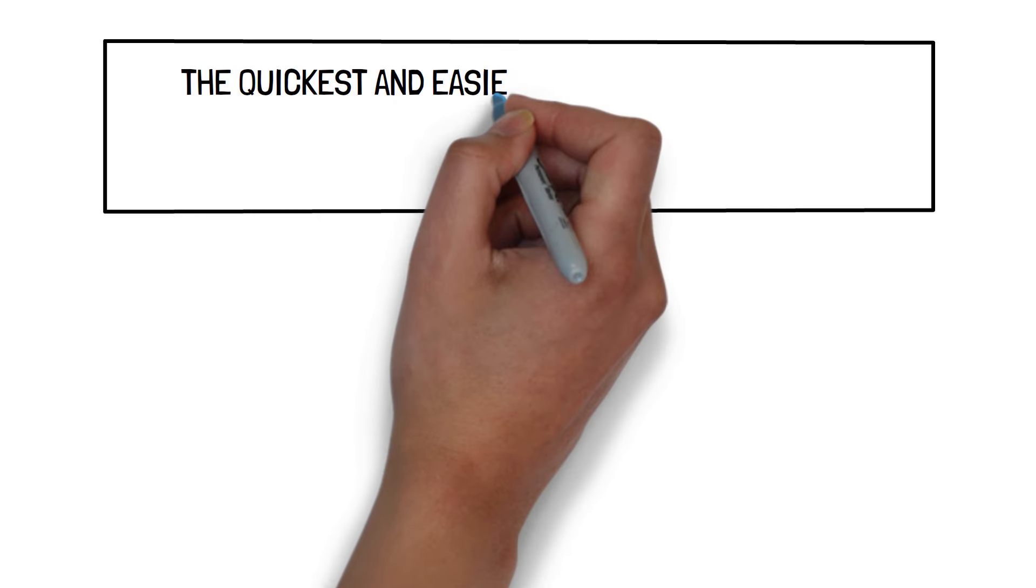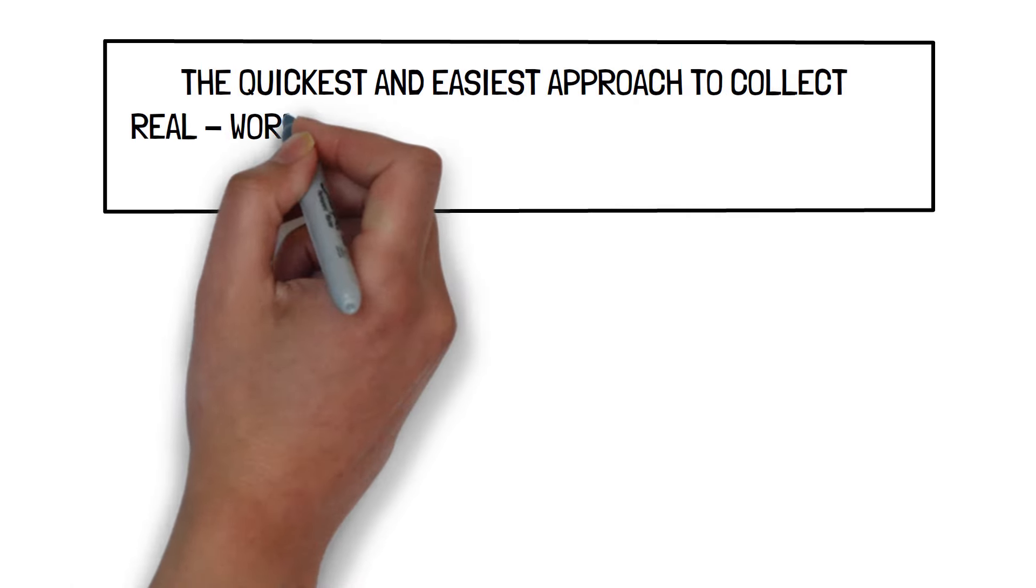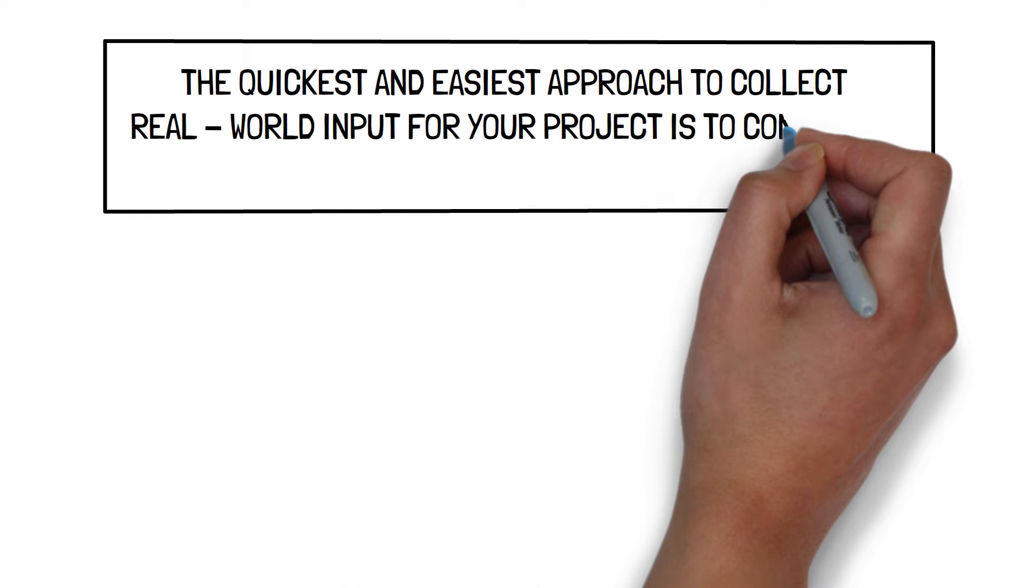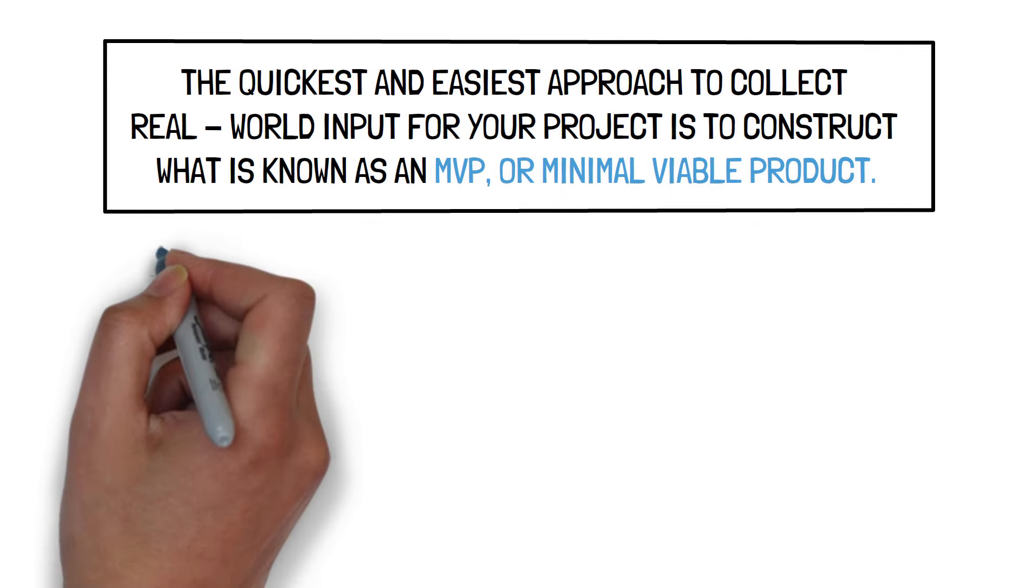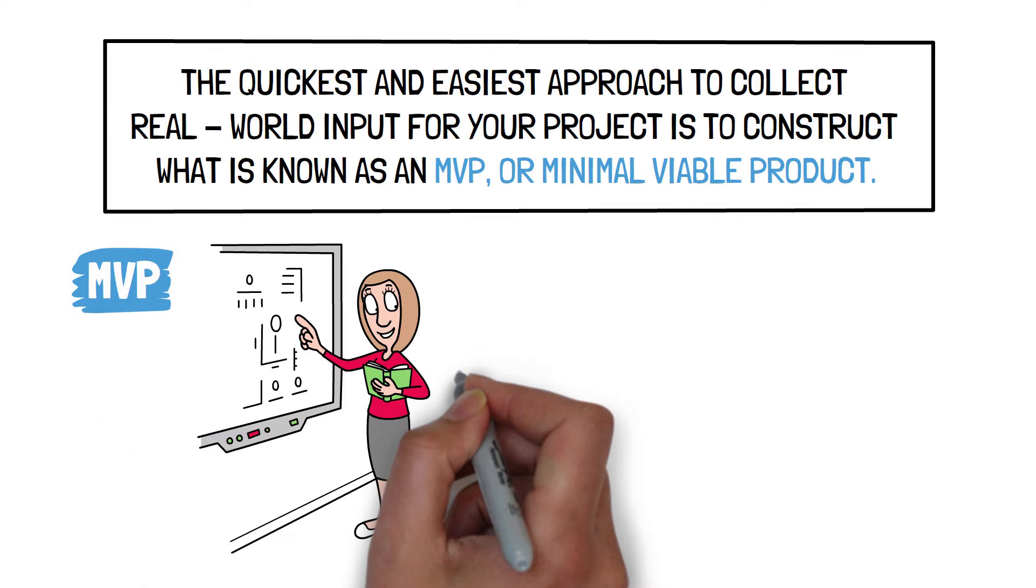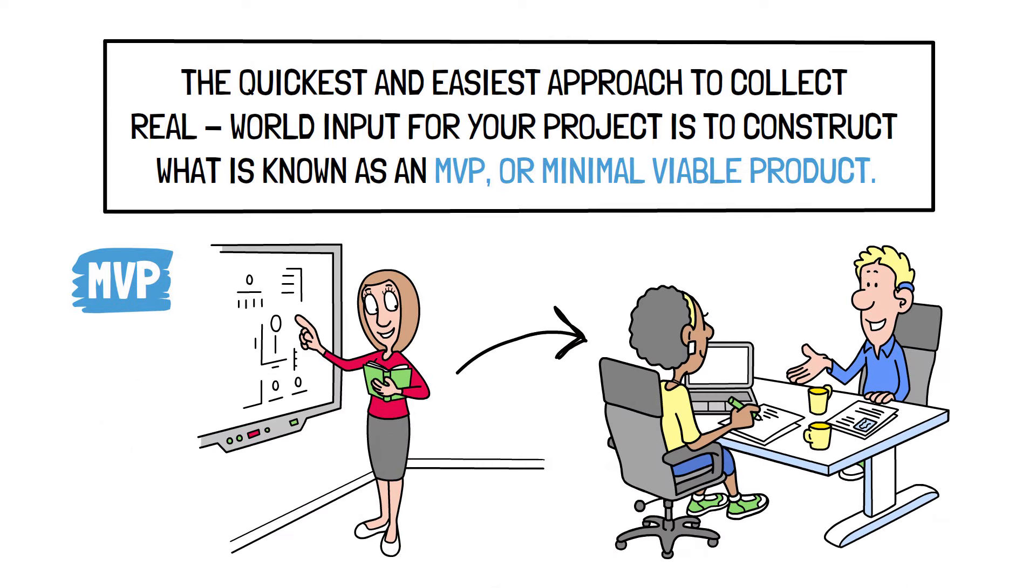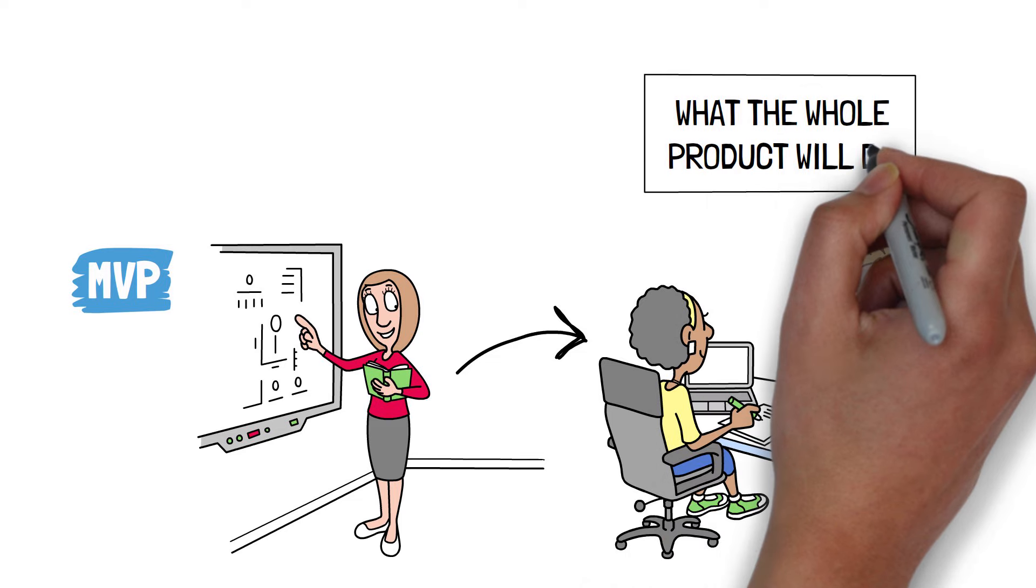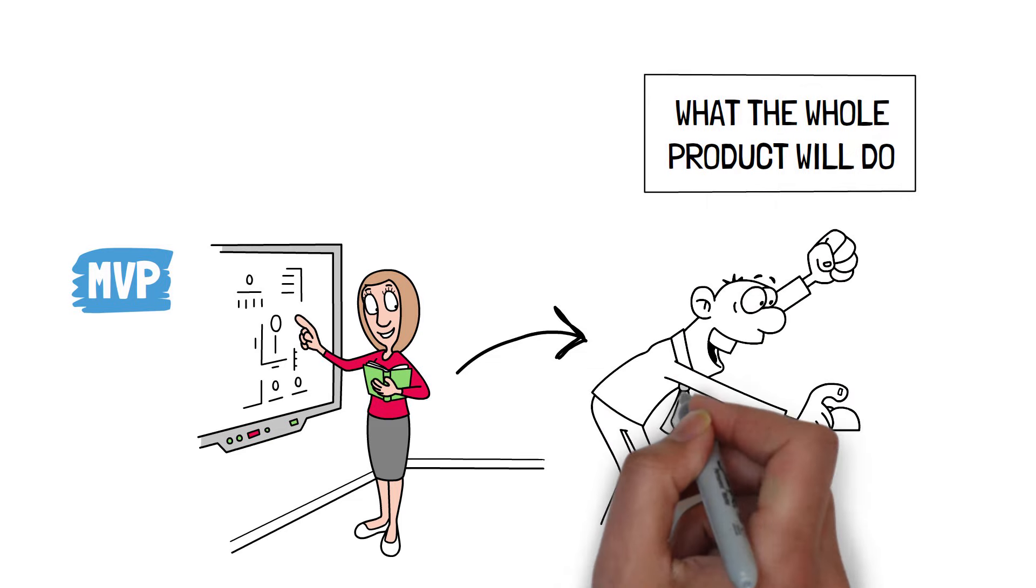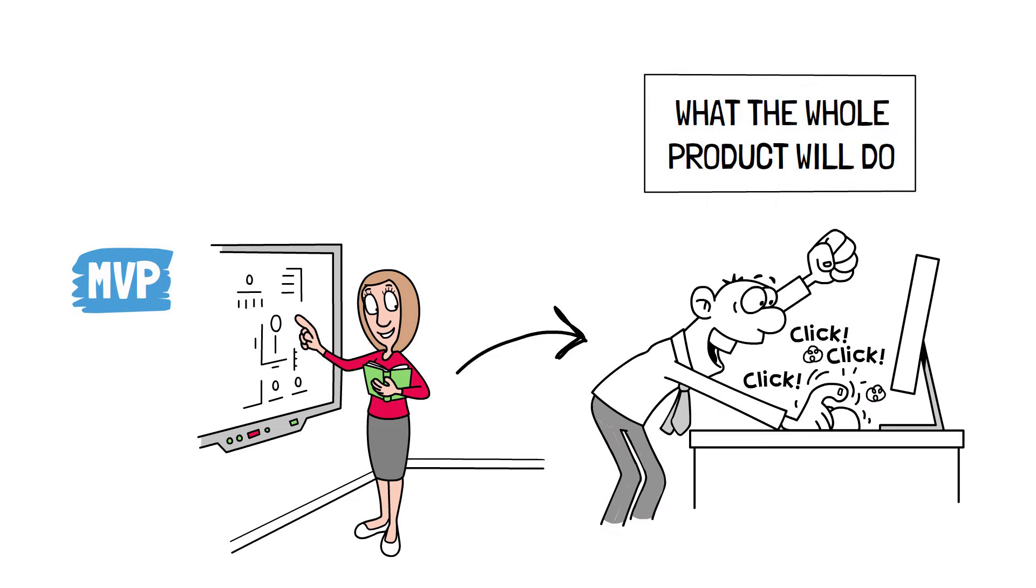The quickest and easiest approach to collect real-world input for your project is to construct what is known as an MVP or Minimal Viable Product. This MVP should be simple and contain only what is required to provide users a reasonable expectation of what the whole product will do: a product prototype to gather relevant information and feedback from your customers.